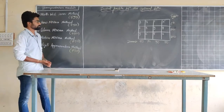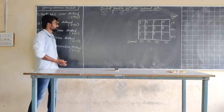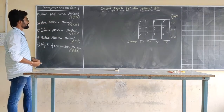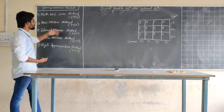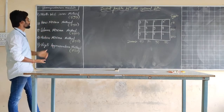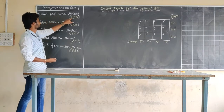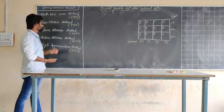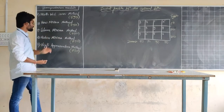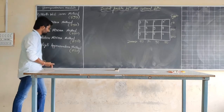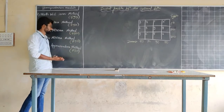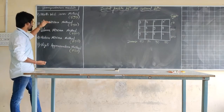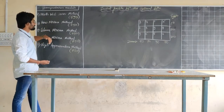Hello friends. In previous videos we have solved this particular transportation model using the five methods that we have for transportation models. By all these five methods we have possibly got different answers or different transportation costs. By northwest corner method we got 890, by row minimum method we got 750, by column minimum method we got 790, by matrix minimum and by Vogel's approximation method we got the transportation cost as 750 units.